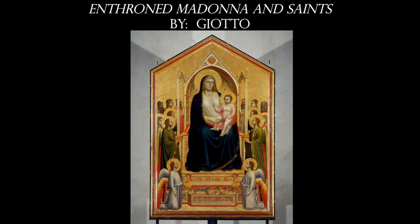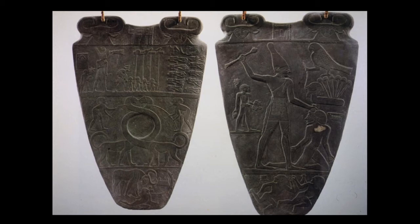Our example from Egypt: the Palette of King Narmer. King Narmer is the very first pharaoh of Egypt — he's the one that unites upper and lower Egypt under one rule around the year 3000 BC. In the image at the left, at the very top register, we see King Narmer about double the height of any of the other figures in that processional. On the flip side of the palette, again, we see him larger than anyone else.